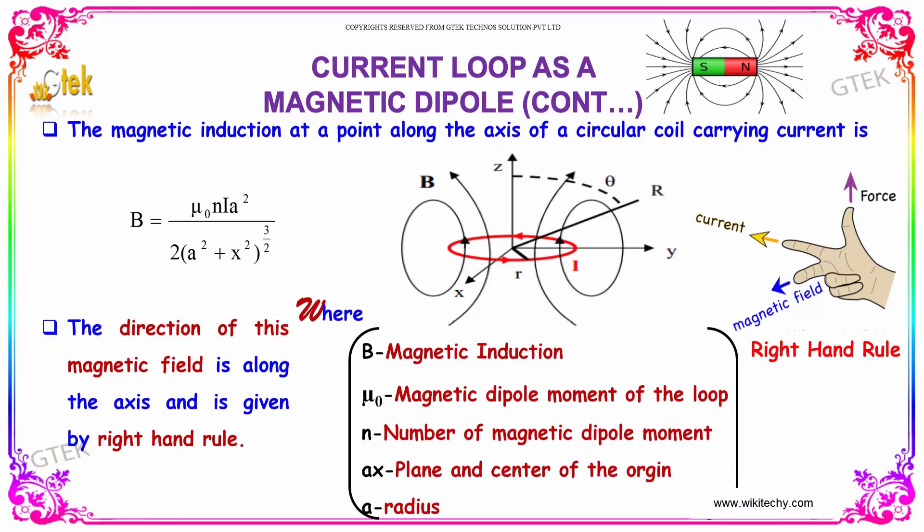The magnetic induction at a point along the axis of a circular coil carrying current is given by B equals μ₀ nia² divided by 2(a² + x²) to the power 3/2. The direction of this magnetic field is along the axis and is given by Fleming's right-hand rule.